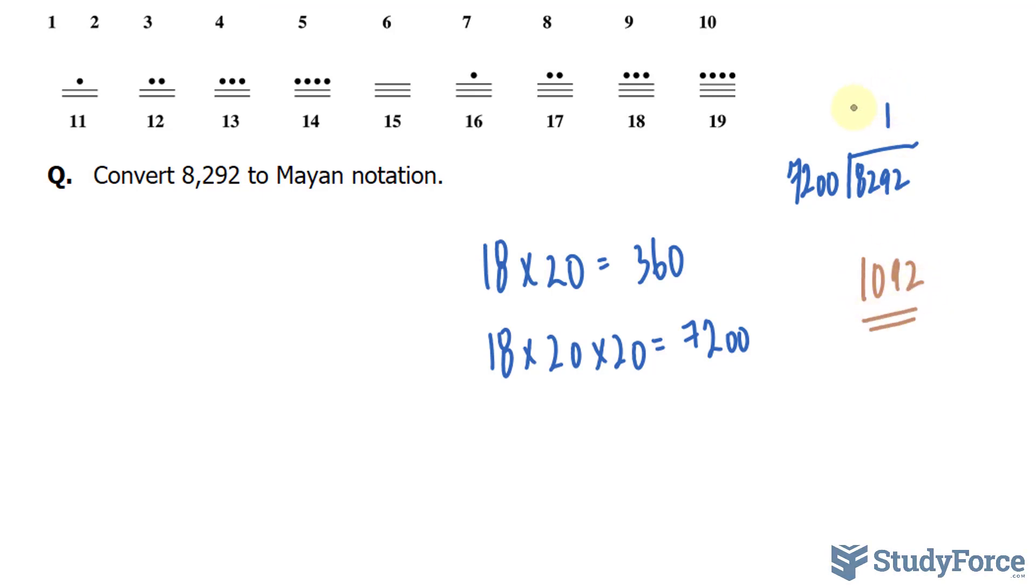First of all, in the highest row of numbers to represent this, we'll have 1 pebble. In the row beneath it, we now have to do the same thing with 1,092. What is the highest multiple of 360 that will divide into that? It's 360.